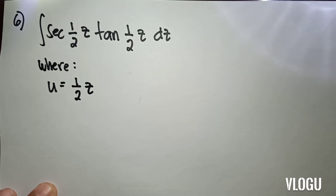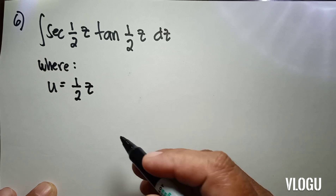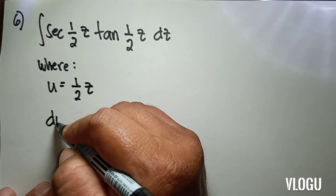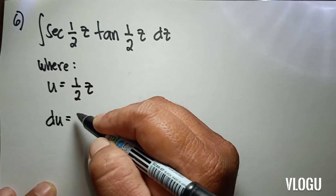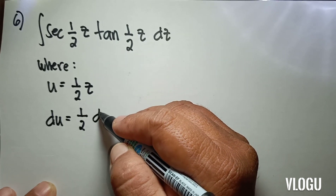Our next example is the integral of sec(½z) tan(½z) dz. In our given, u is equal to ½z, so du is equal to ½ dz.